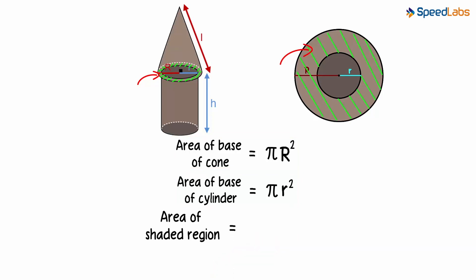It will be the area of the base of the cone minus the area of the base of the cylinder. That will equal PI R squared minus PI r squared. That's the area of this shaded region between the two circles.